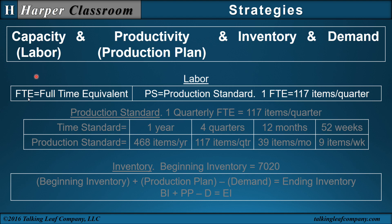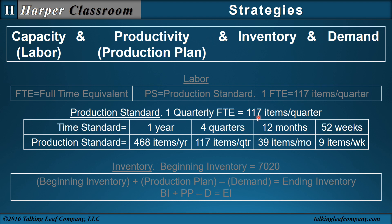Labor is defined as a full-time equivalent. So an FTE refers to a full-time equivalent worker. The relationship between labor and production is in the production standard. The production standard we will use in this video is one FTE equals 117 items per quarter, where the FTE is the labor and the 117 items is the output or production. Multiply that by four, and we have an annual production standard of 468 items per year. So one quarterly FTE can generate 117 items, and one annual FTE can generate 468 items.